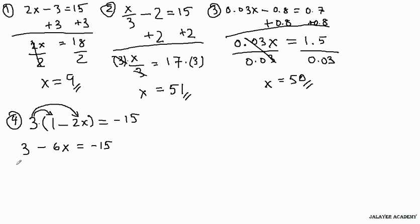Next step. Let's take this 3 over to this side. This is a positive 3, so we subtract by 3 here and subtract by 3 here. What we have is negative 6x on the left side and negative 18 on the right side.